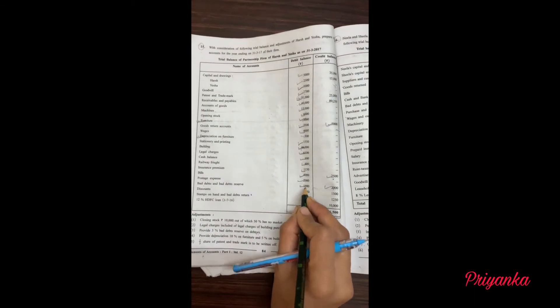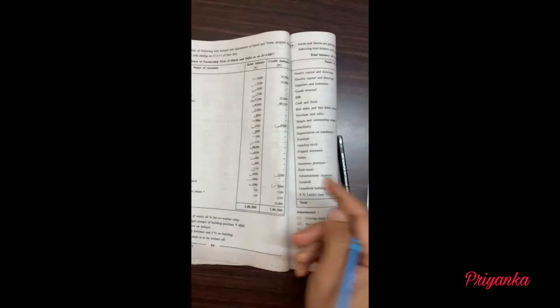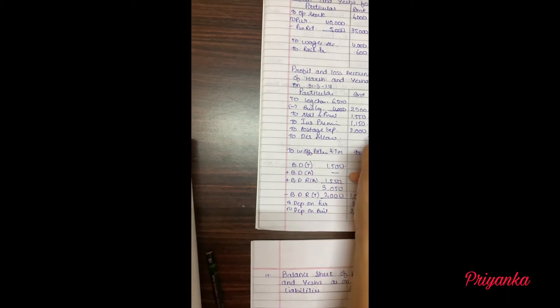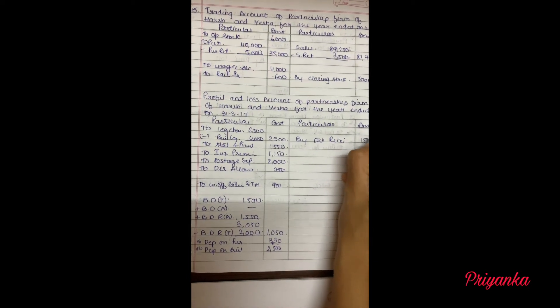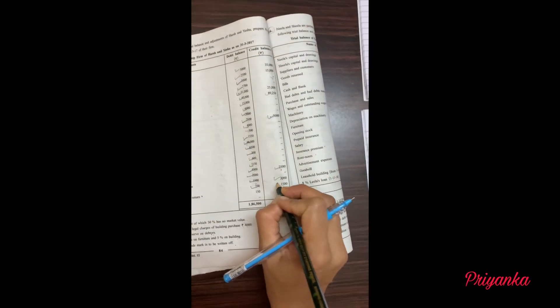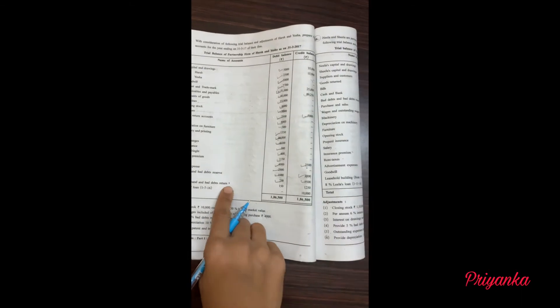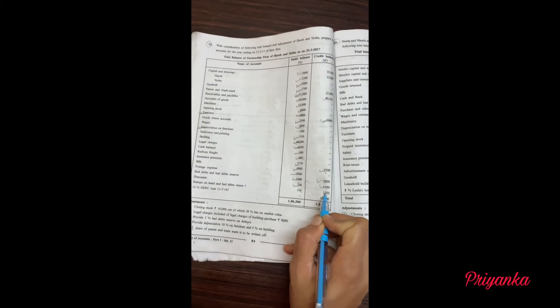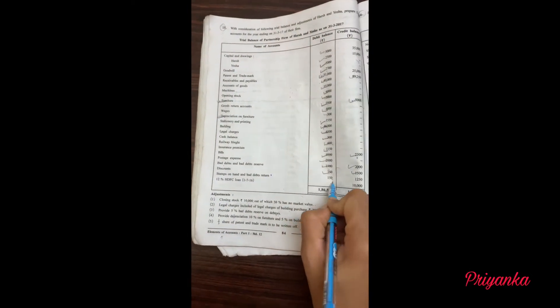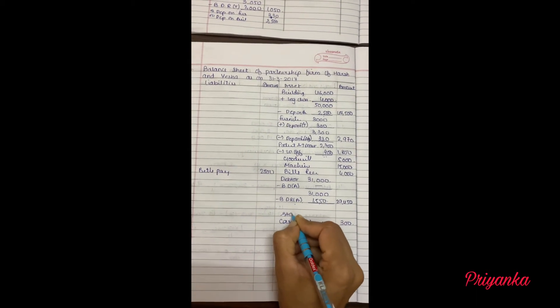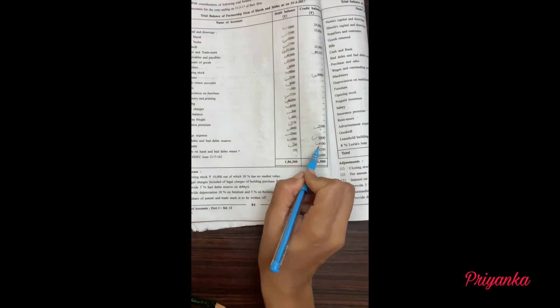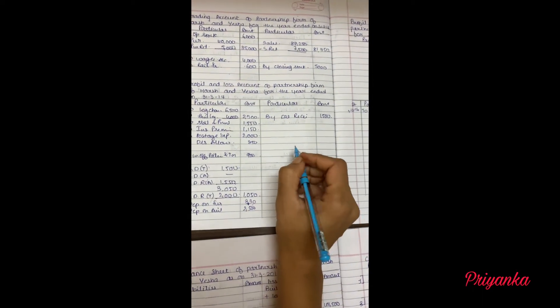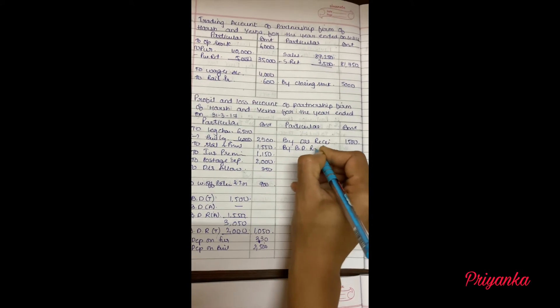Next, discount — the debit side moves to the profit and loss debit side, and the credit side moves to the credit side. That is discount allowed 750 and discount received 1,500. Next, stamp on hand and bad debt return. Stamp on hand is 150 and bad debt return recovered is 1,250. Stamp on hand of 150 goes to the asset side, and bad debt recovered of 1,250 comes to the profit and loss credit side.